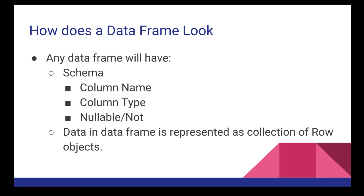Typically, a DataFrame will have a schema. A schema contains the column name, the data type of the column, and whether the column can have a null value or not. Data in the DataFrame is represented as a collection of Row objects. Each Row object shares the single schema of the entire DataFrame, which has the column name, column type, and nullable flag.